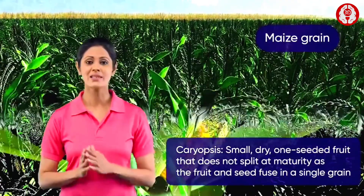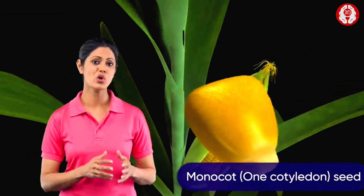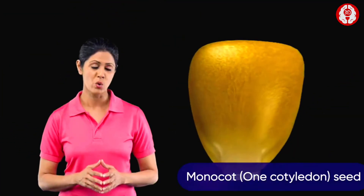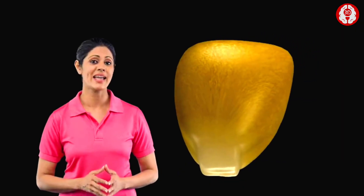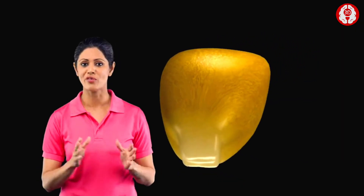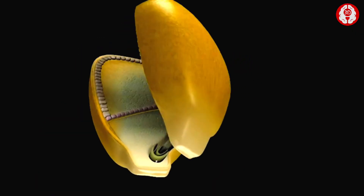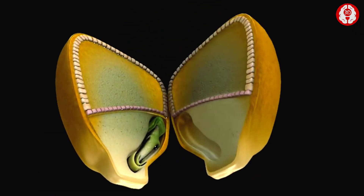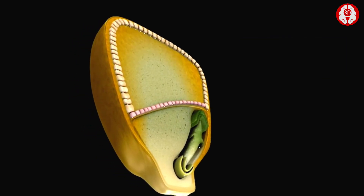The maize grain is a caryopsis type single-seeded dry fruit. It is a monocot seed with one cotyledon and has the endosperm for the nourishment of the embryo. A longitudinal section of the maize grain shows a seed coat and a single cotyledon known as the scutellum.